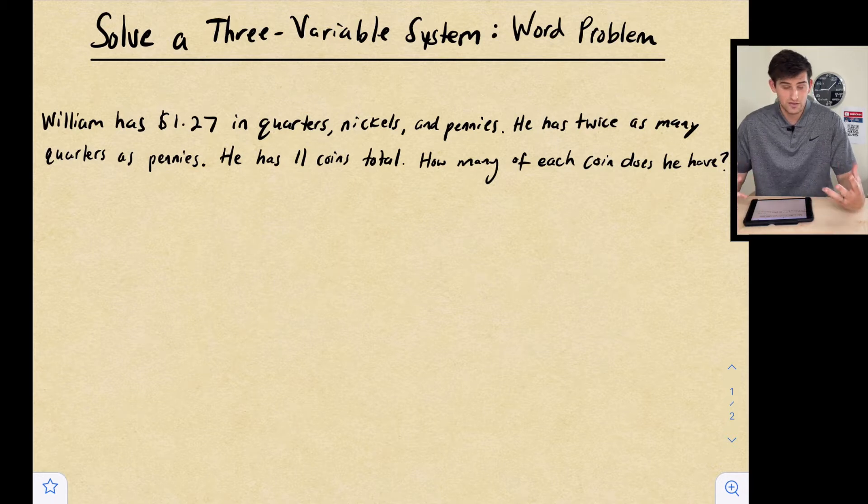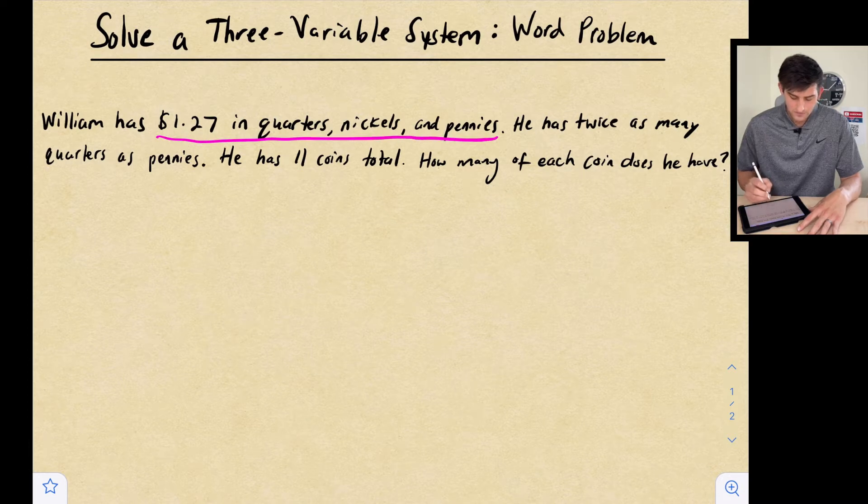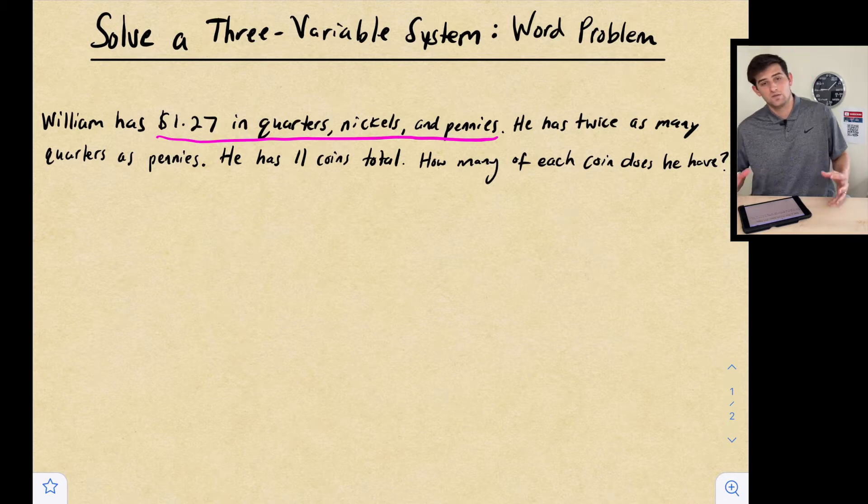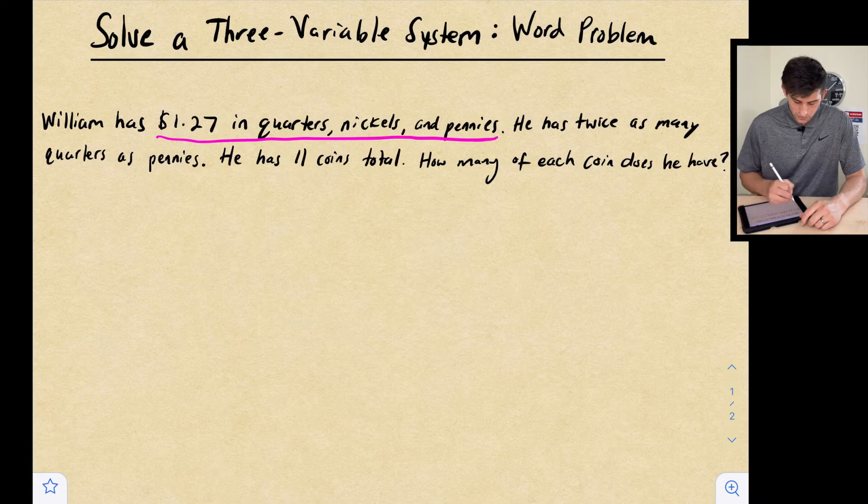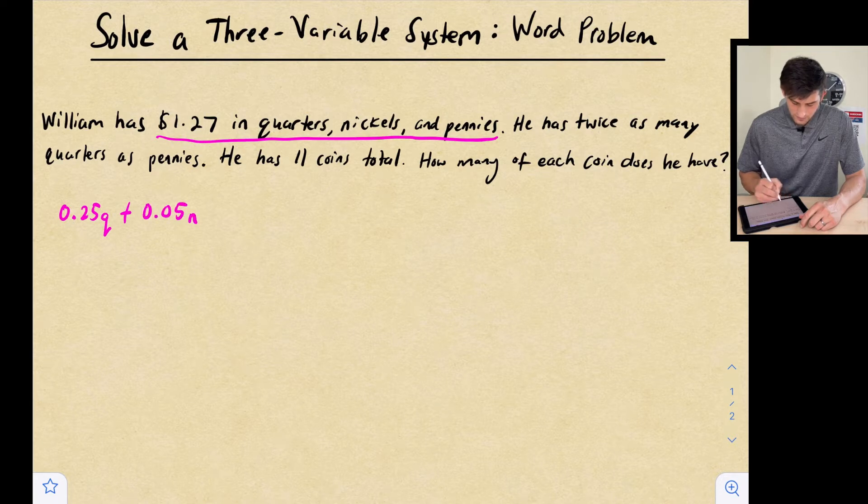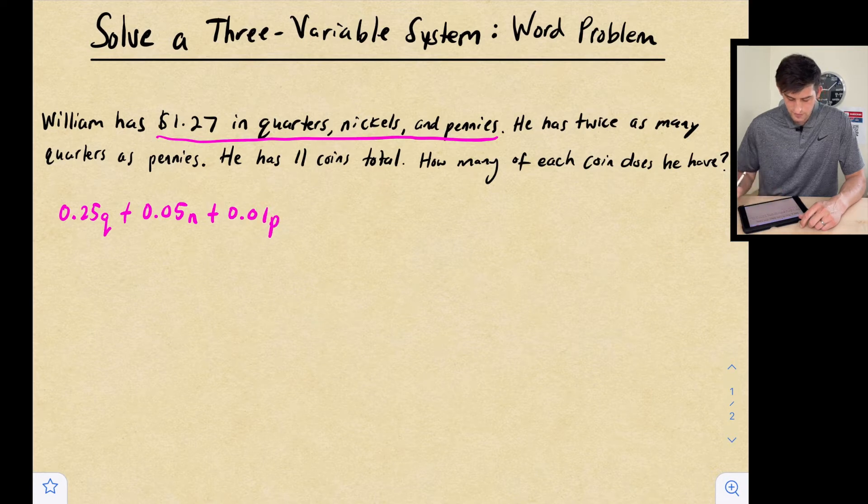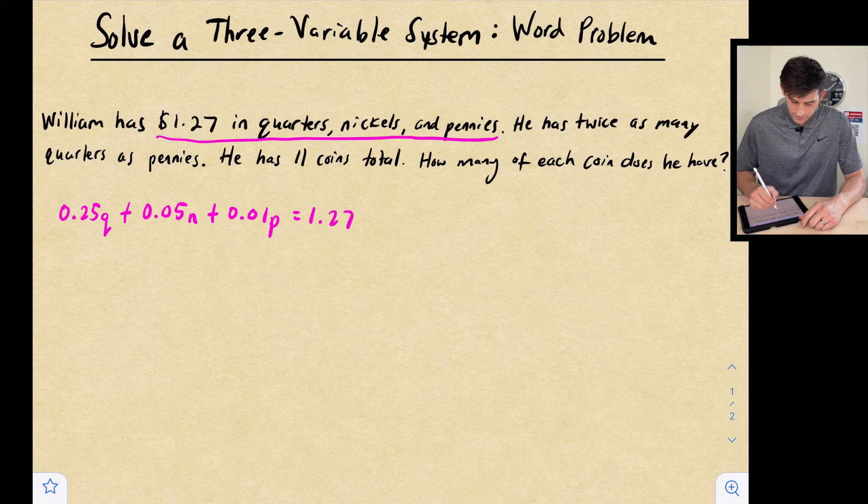We can go ahead and write our three equations here. William has $1.27 in quarters, nickels, and pennies. We need to think about the actual value of these coins because once we add the value together, that's going to give us our total amount of money. We know a quarter would be $0.25, so 0.25Q, plus a nickel would be $0.05, 0.05N, and a penny would be $0.01, 0.01P. And we know that is going to be equal to the total amount of money we have, $1.27. So that's one of our equations.